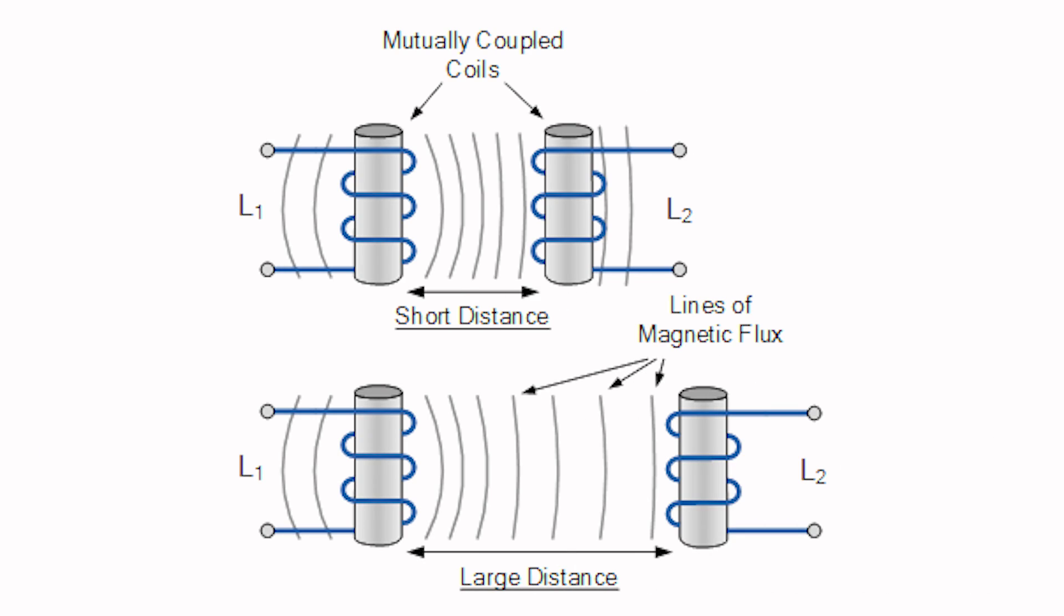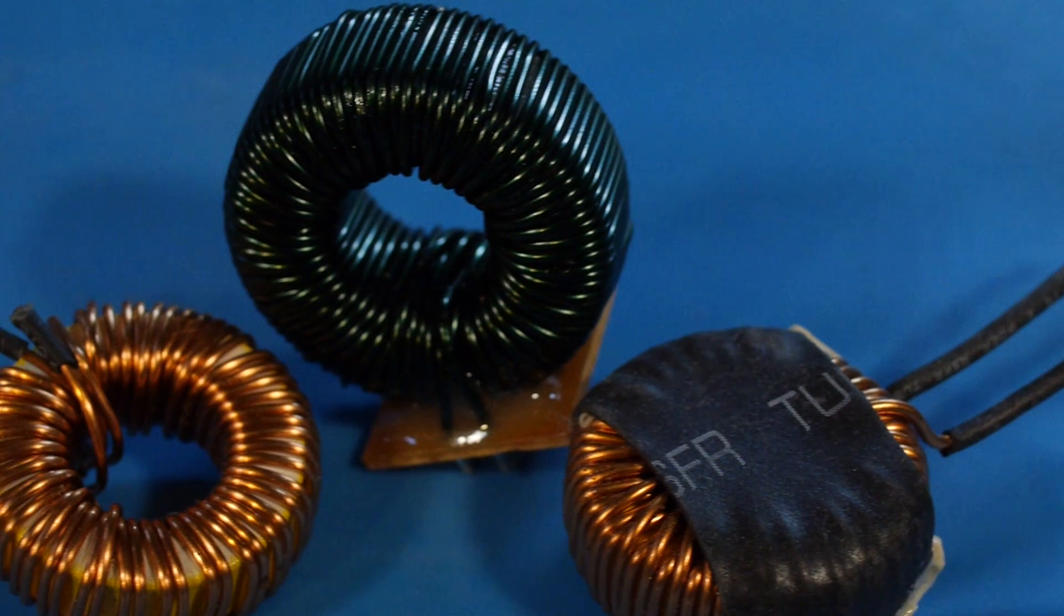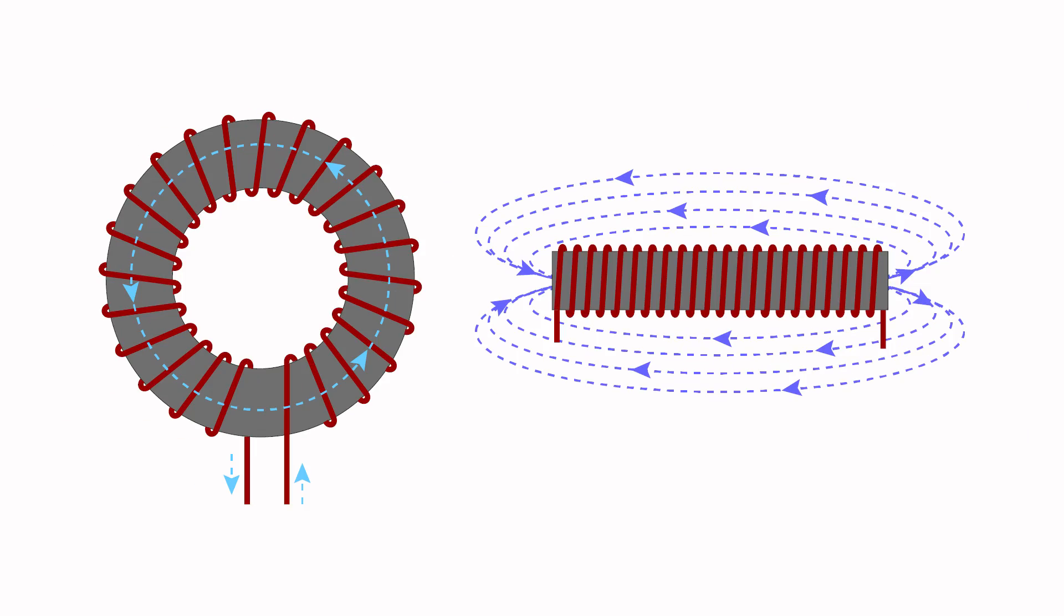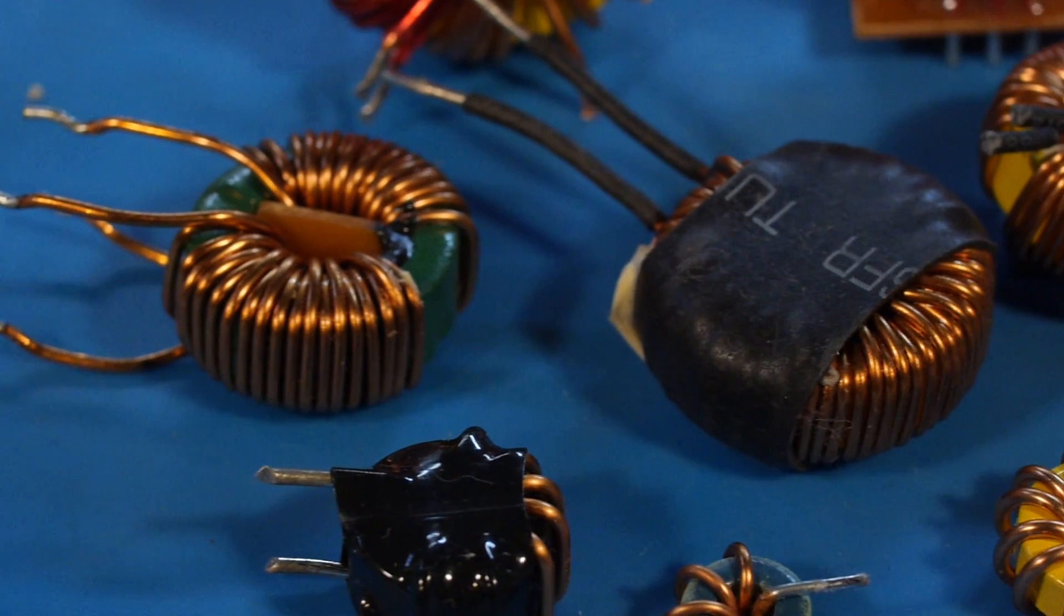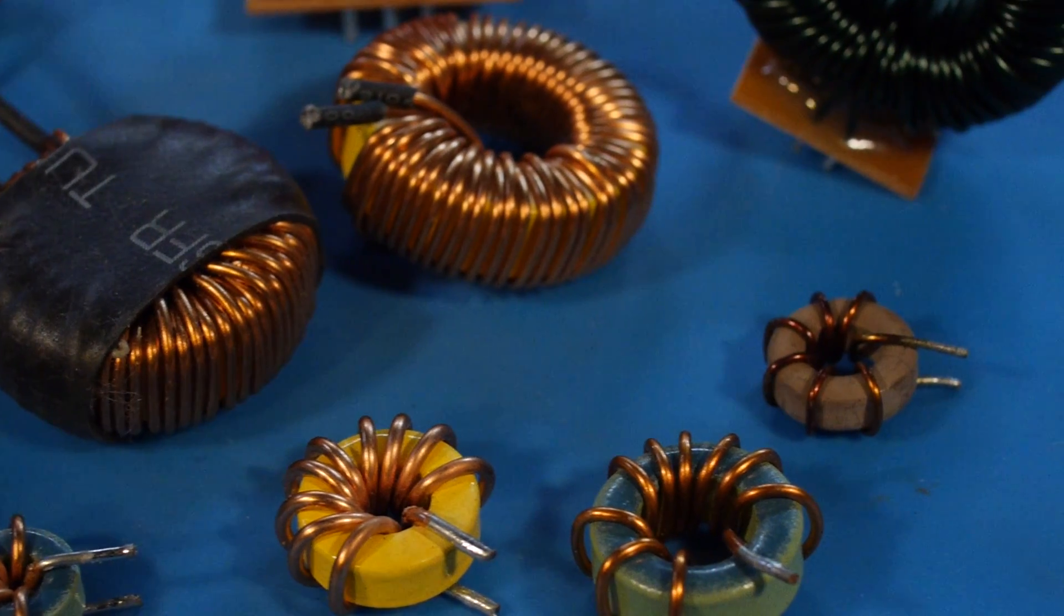Since a coil's magnetic field can extend significantly outside the component, it's difficult to keep them from affecting each other. One way to minimize the effects of this mutual inductance is by using donut-shaped or toroidal windings. Because of its shape, nearly all the flux produced by the coil remains in the core. Compared to solenoidal inductors, toroids can have greater inductance values for their size, as well as have extremely accurate rated values.